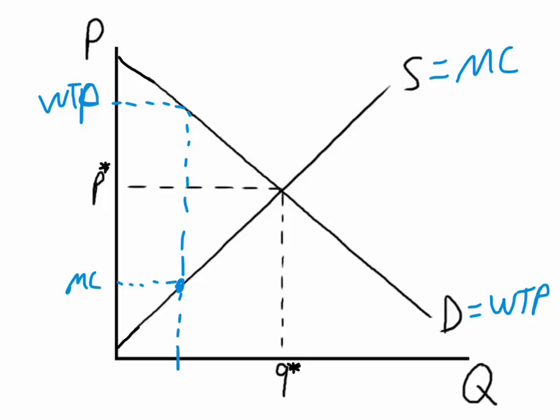What's nice is that at any quantity that is transacted in the market, we have a situation where the consumer's willingness to pay is above the market price, and the producer's marginal cost, that's the least amount of money that they would take to sell it, is below that price. So we see that these are mutually beneficial transactions.